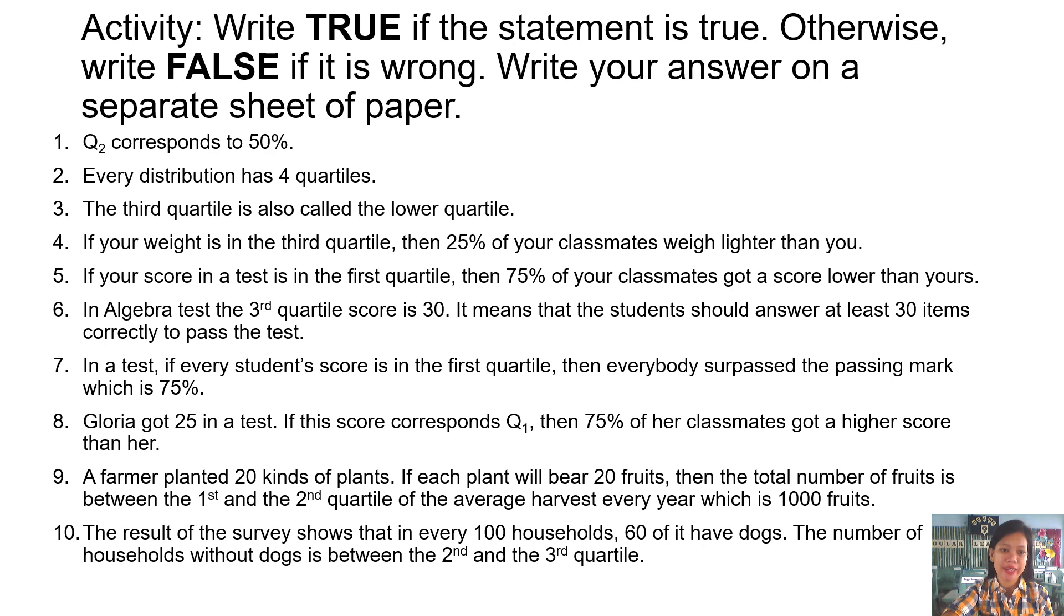Number five: If your score in a test is in the first quartile, then 75% of your classmates got a score lower than yours. Is it true or false? Number six: In algebra test, the third quartile score is 30. It means that the students should answer at least 30 items correctly to pass the test. Is it true or false? Number seven: In a test, if every student's score is in the first quartile, then everybody surpassed the passing mark, which is 75%. Is it true or false?